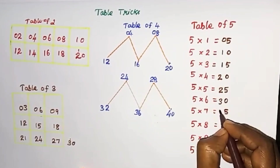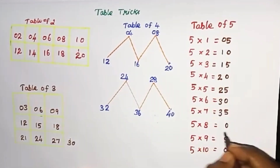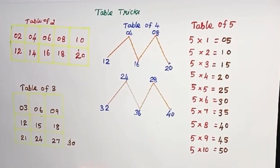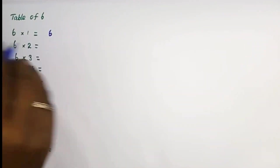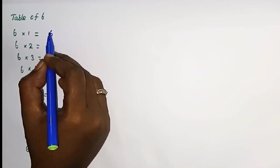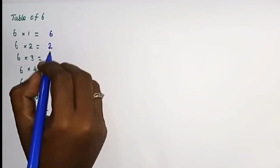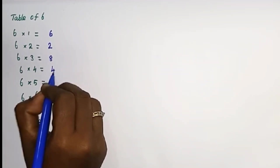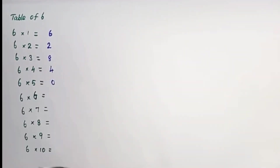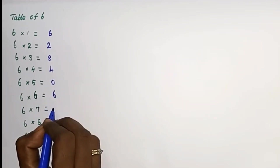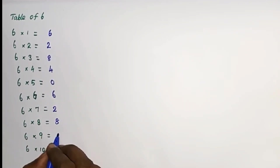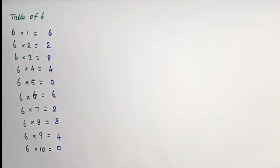3, 3. 4, 4. 5, 5. 6, 6. 8. 4. 0. Write the same again: 6, 2, 8, 4, 0.